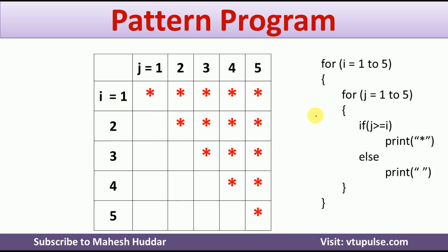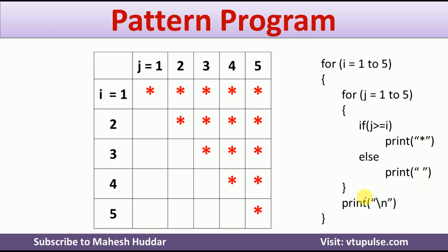So, that can be written as follows: if the j value is greater than or equal to i, I will print star; in all other cases, I will print space. Once again — if the value of j is greater than or equal to i, print the star; otherwise, print a space. And after every row, once the row is over, we need to add a new line character. So this is the complete programming construct which will help you to draw this particular pattern.